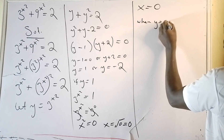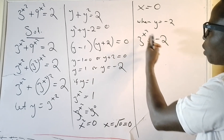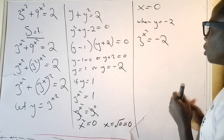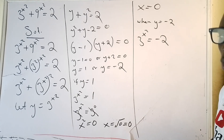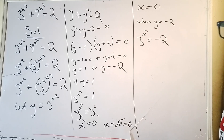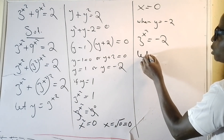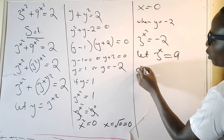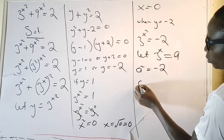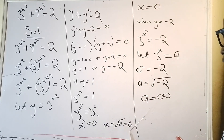When y equals minus 2, we have 3 raised to the power x squared equals minus 2. Different people may use different approaches here — some may introduce a natural log, some may apply log to both sides. If we let a equal 3 raised to the power x, then a squared equals minus 2, meaning a equals the square root of minus 2, which is not real — it equals infinity. So there is no real solution in this case.